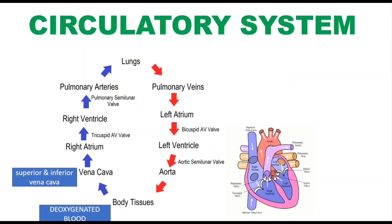Deoxygenated blood enters into the right atrium through the superior and inferior vena cava. From the right atrium, blood flows to the right ventricle through the tricuspid valve, and from the right ventricle the blood enters into the lungs through the pulmonary arteries.